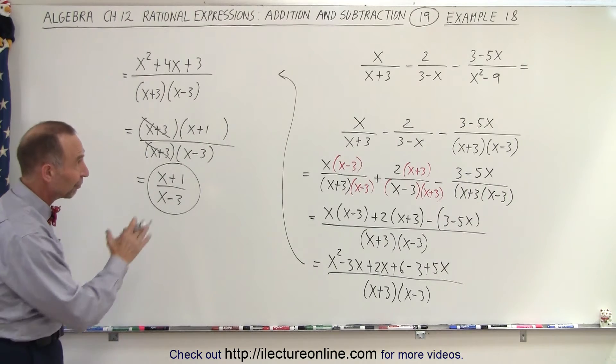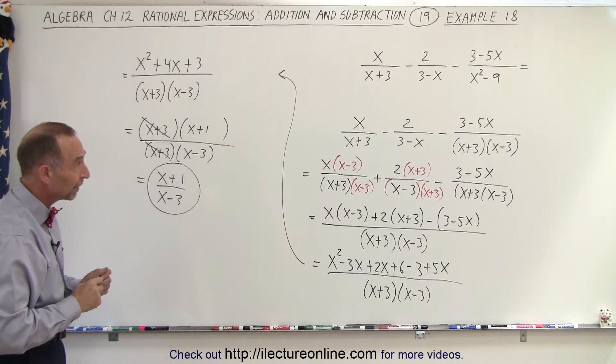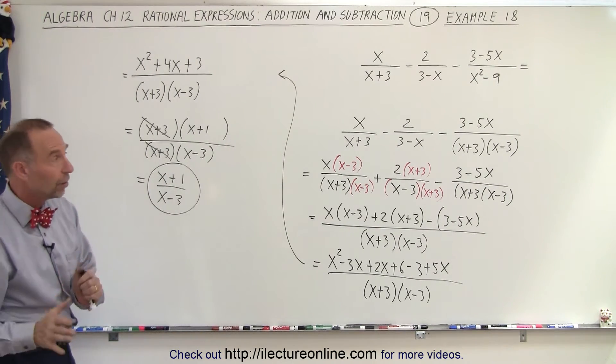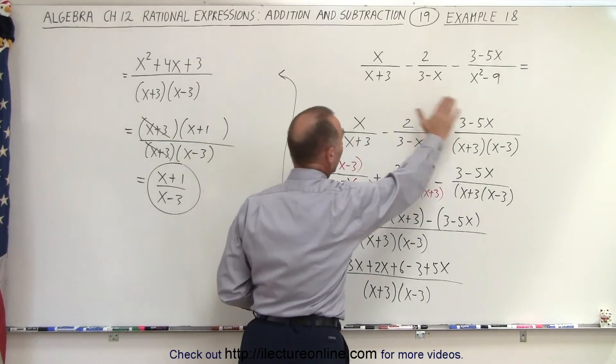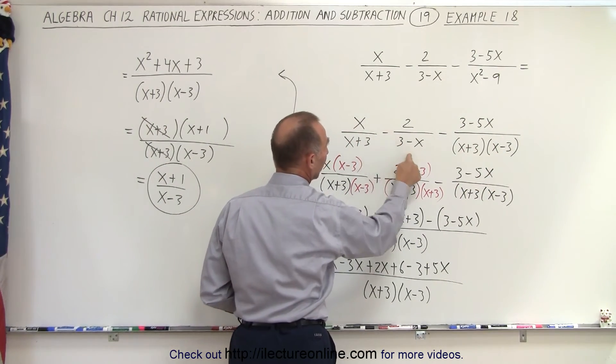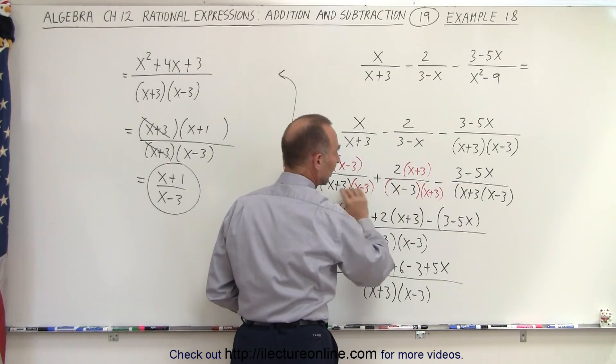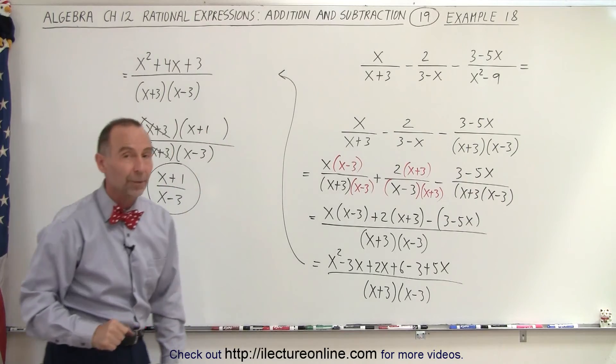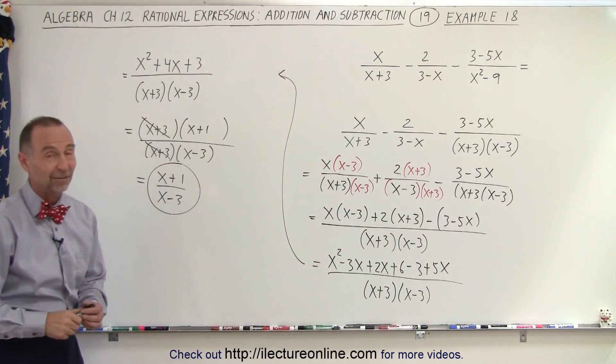And there you go. That's the simplest form for that initial problem. So two tricks: first of all, make sure you factor all the denominators first. Then realize that by flipping this one over, by multiplying both the numerator and denominator by negative 1, we can make it look like this. That makes it easier to find the common denominator. That's how we do that.